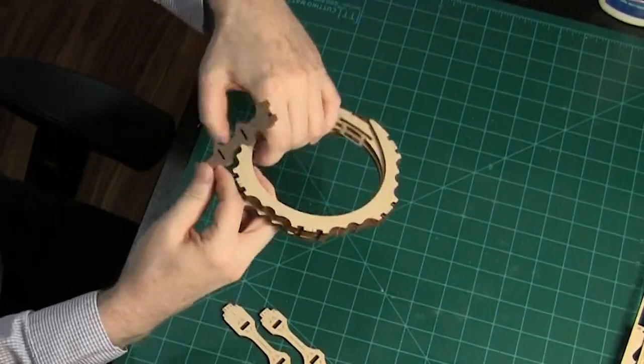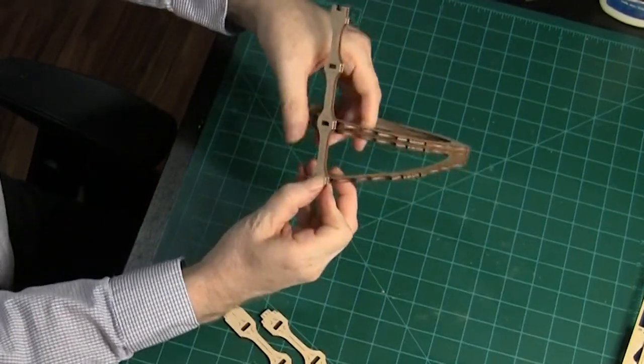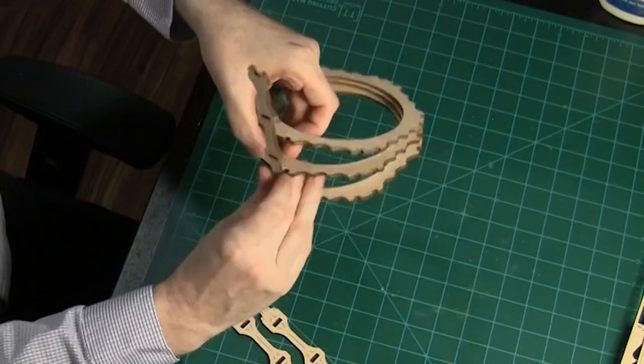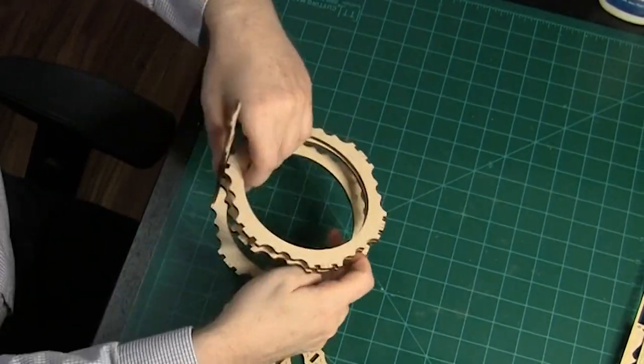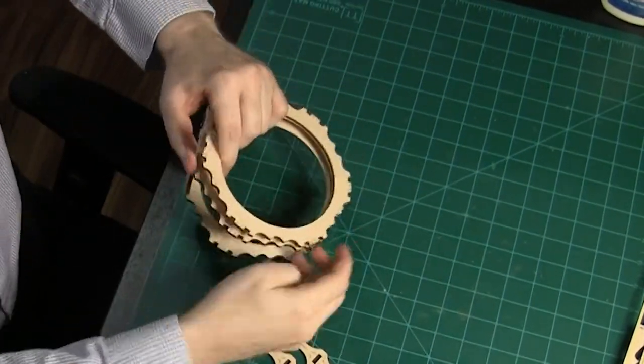Now add the support pieces. These are numbered at the bottom and force the ramp into a spiral. Make sure the supports are in the correct orientation. Start with the first one, positioned at the bottom end of the ramp. Be careful not to stretch the ramp further than necessary.